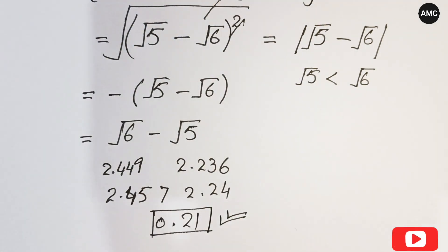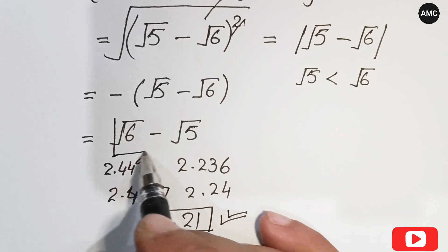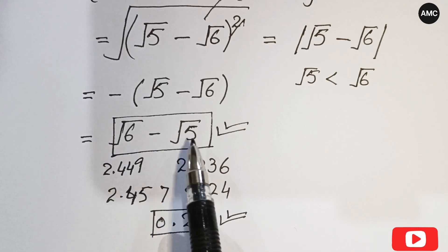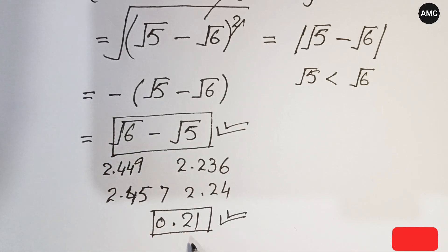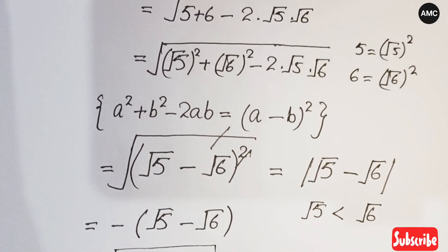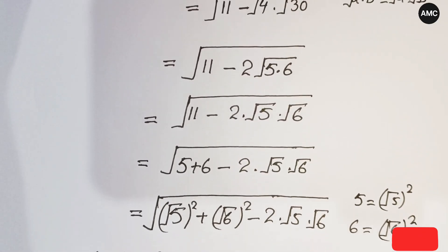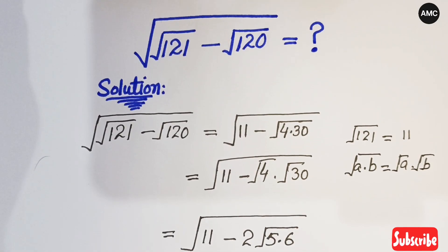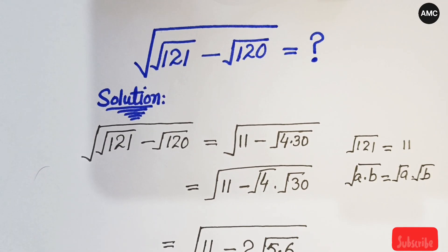So the final simplified form of this problem is √6 minus √5, which is approximately 0.21. I hope you have enjoyed this video. Don't forget to subscribe to my channel for more interesting content. Thanks for watching, thanks for your support, have a nice day, goodbye.